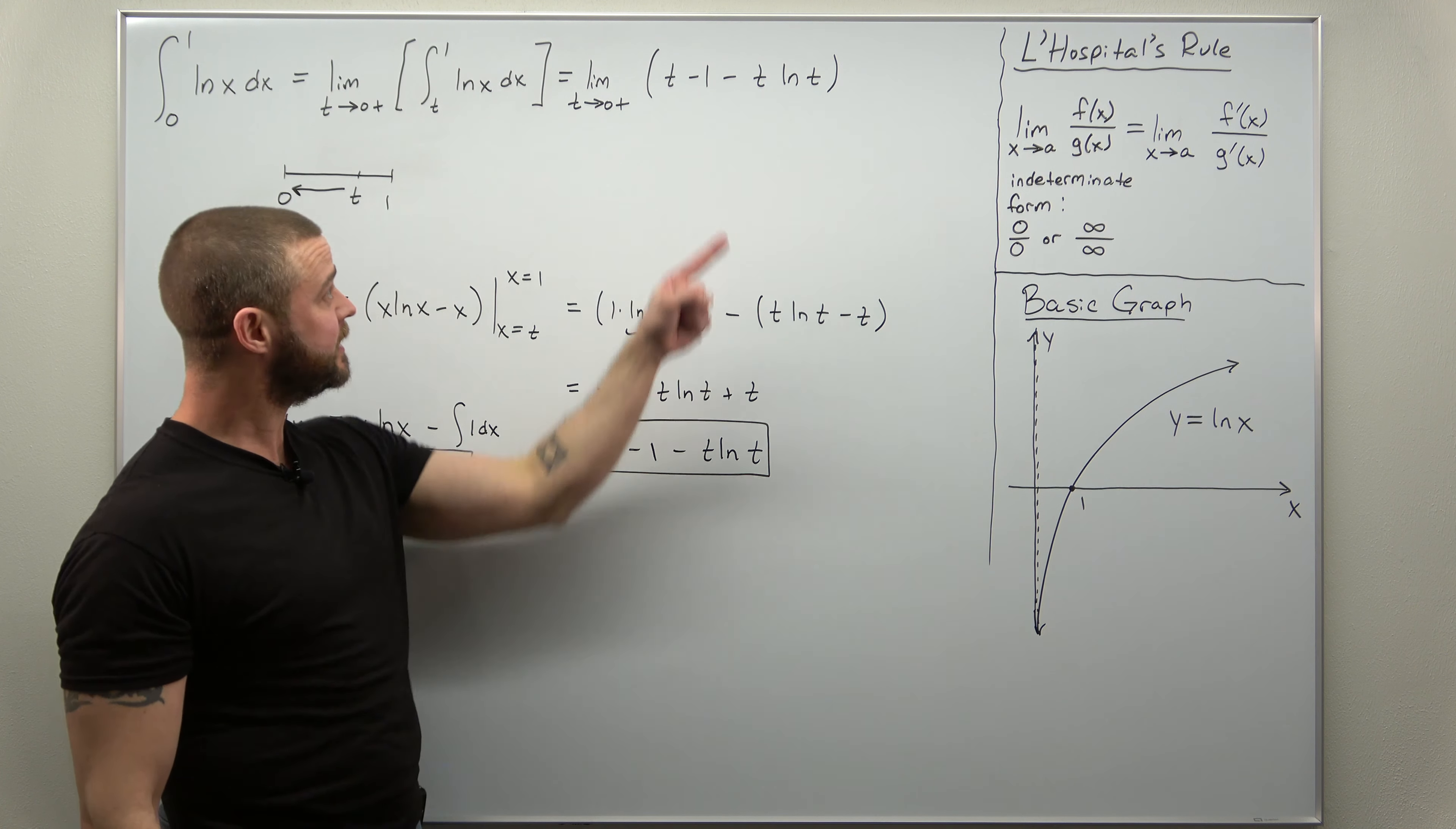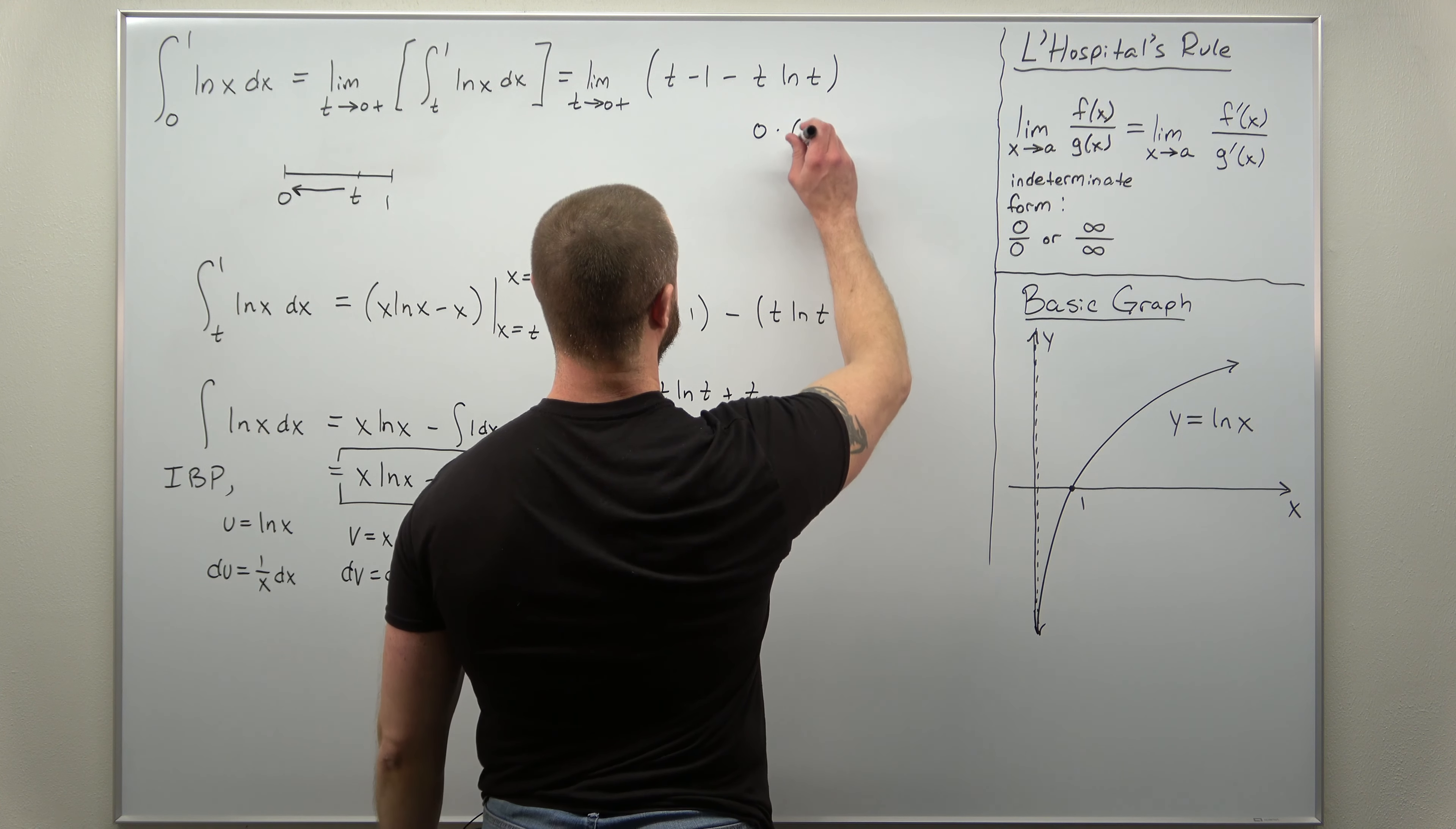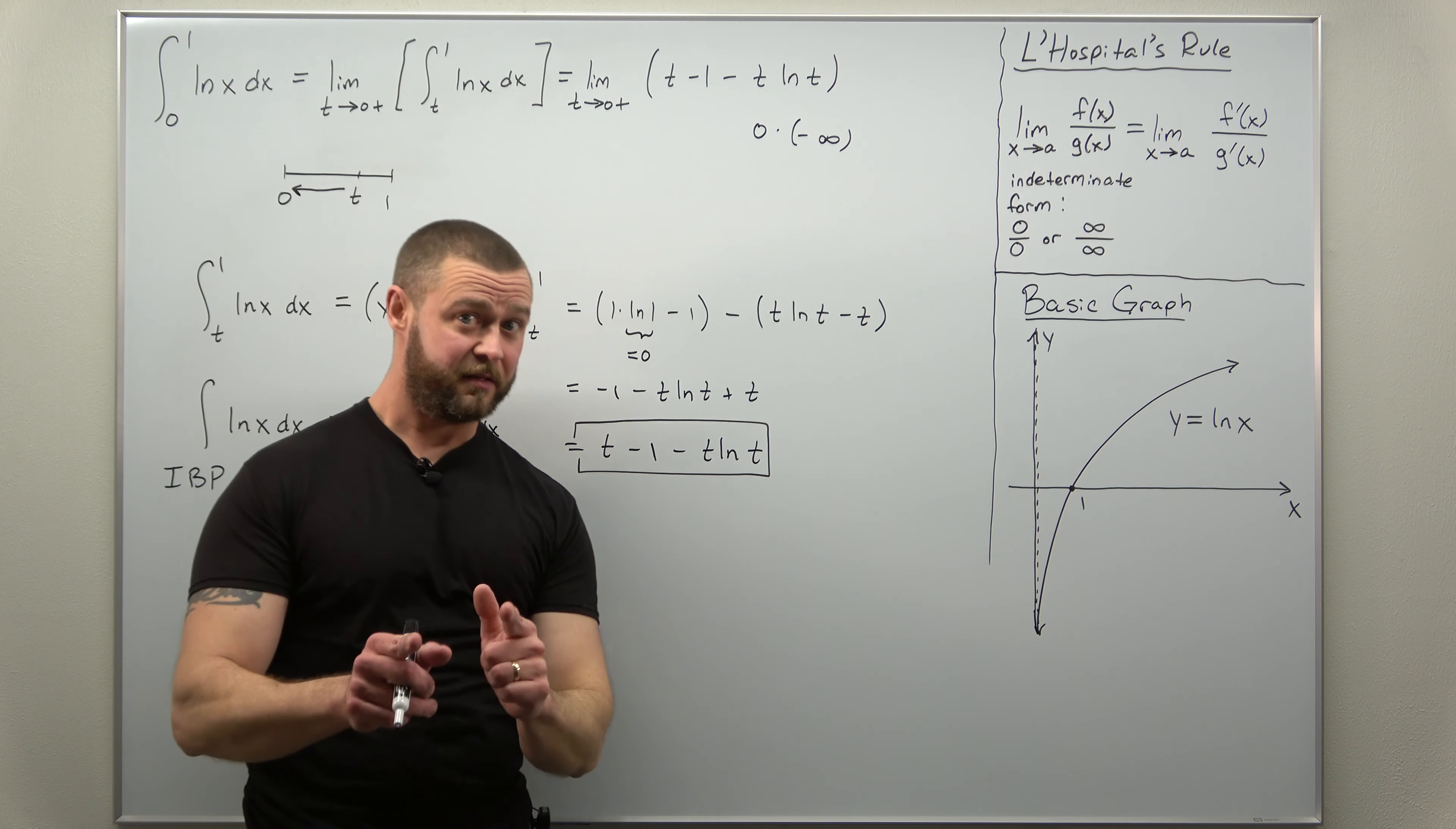Now, if you actually take a look at what's happening to that as t approaches 0 from the right, your factor of t, that's going to approach 0. But notice from your graph, the natural log of t term, as you approach 0 from the right, that's going to approach negative infinity. So what we get here, this is an indeterminate form, but it's not an indeterminate form of the type that we need to apply L'Hopital's rule. So the next part, we'll get to applying L'Hopital's rule to evaluate that limit.